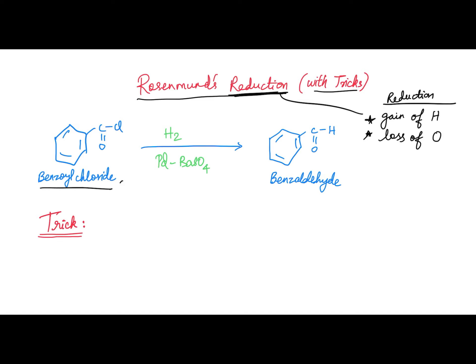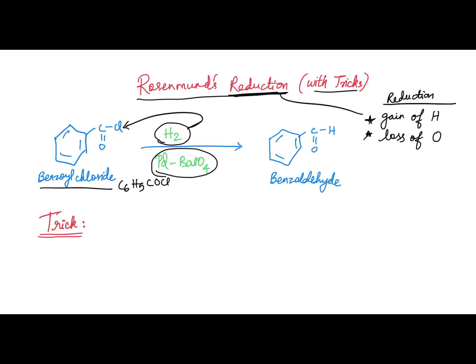Now let's go into the reaction. Benzoyl chloride, C₆H₅COCl, reacts in the presence of H₂ and Pd/BaSO₄. We use H₂ because it is a reducing agent — it gives hydrogen to the compound. The Cl is a good leaving group; it will leave and H will come and occupy its place. How simple this reaction is!